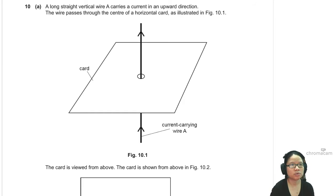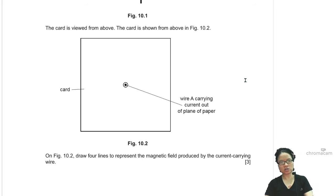Question 10. We have a long straight vertical wire carrying current in the upward direction, and the wire passes through the center of the card. From the top view, draw four lines to represent the magnetic field.